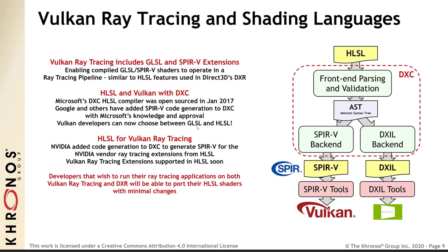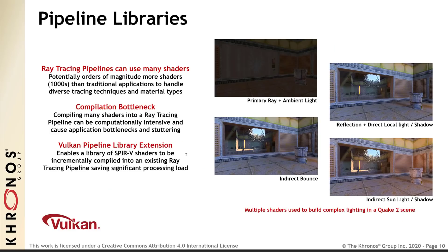Part of how Vulkan ray tracing is implemented is via SPIR-V shaders. You've got HLSL front-end parsing and validation, abstract syntax tree, and then the SPIR-V backend or the DXIL backend. There is now support for the DirectX shader compiler so HLSL shaders can be compiled directly in. NVIDIA added code generation to DXC to generate SPIR-V for the NVIDIA vendor ray tracing extensions for HLSL. So you can use your Direct3D shaders with Vulkan, which is quite nice.